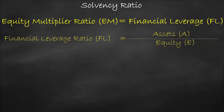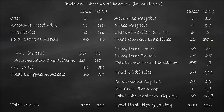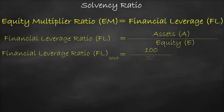So let's calculate the financial leverage ratio for the year 2018. Total assets are equal to $100 million from the balance sheet, divided by total equity of $30 million, which we also get from the balance sheet, which is equal to 3.33 times. The unit of the financial leverage ratio is times.